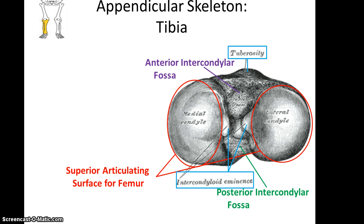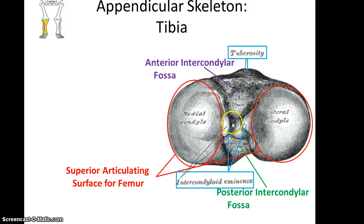Looking straight down on the proximal end of the tibia, you can see the two parts of the superior articulating surface, the anterior intercondylar fossa, the intercondyloid eminence, and the posterior intercondylar fossa.